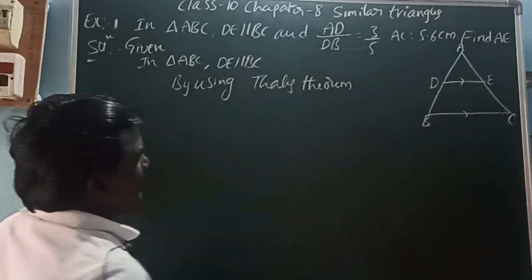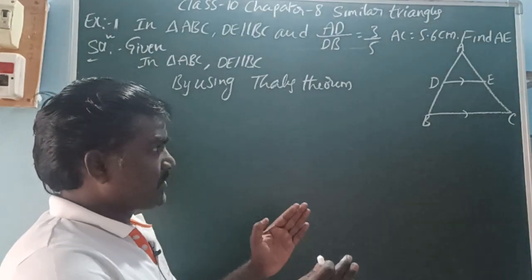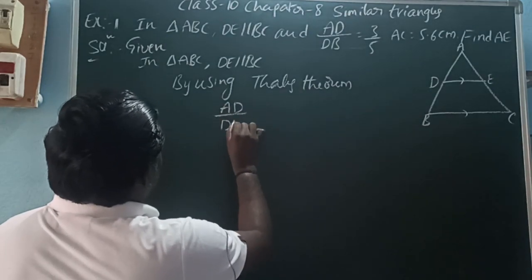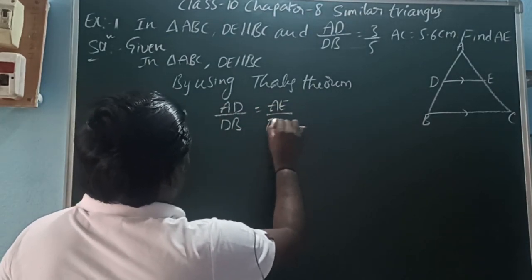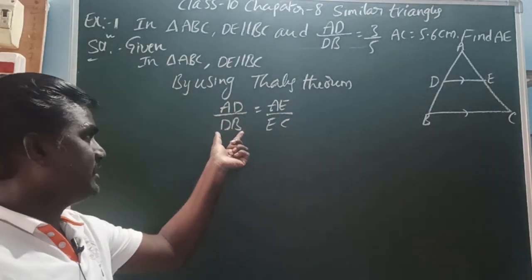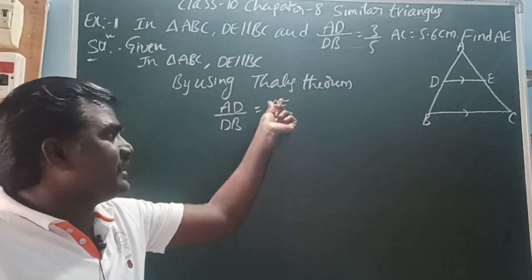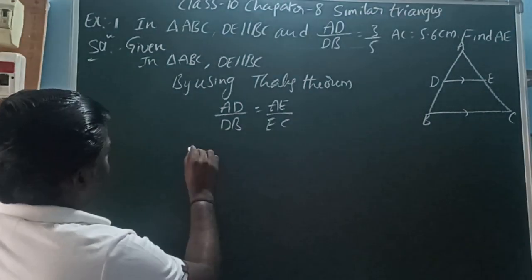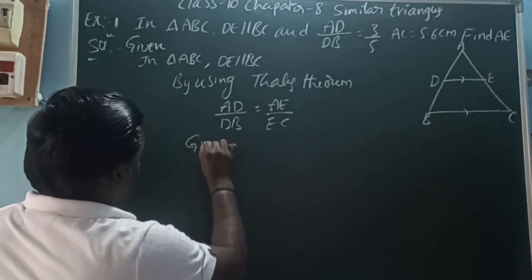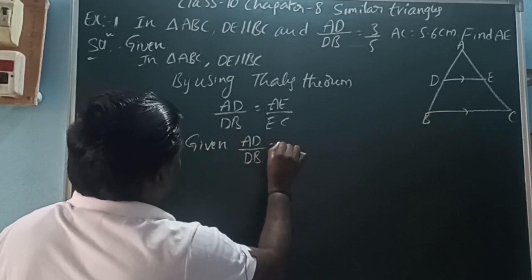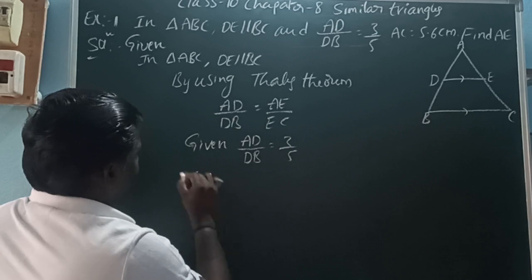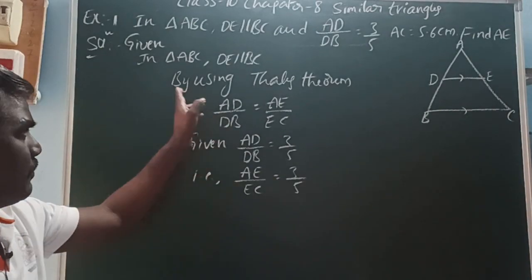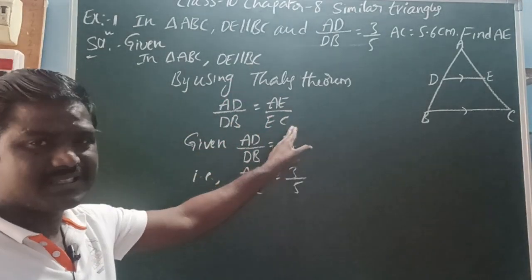By the Thales theorem, if a line is parallel to the third side, then it divides the remaining two sides in the same ratio. So here, AD by DB is equal to AE by EC. That means the ratio AD to DB gives us the same ratio AE to EC. In the problem, AD by DB is given as 3 by 5.